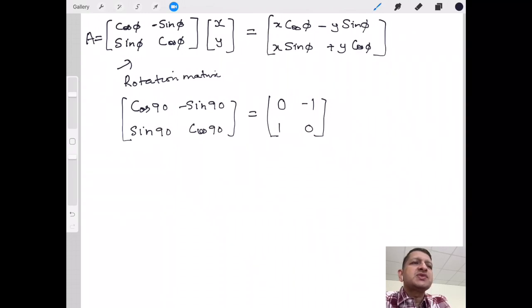Let's see how exactly this happens. So I have this and I'm going to multiply it with x, y. As I multiply this, x into 0 minus y, I get -y there, and x into 1 plus 0, I get x here.